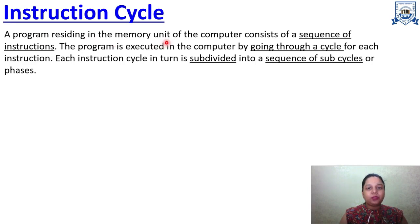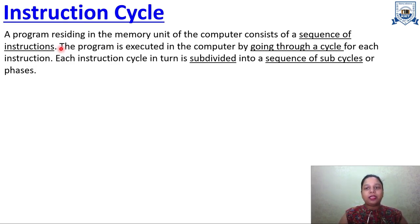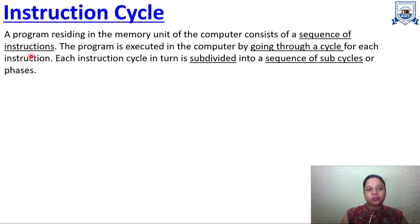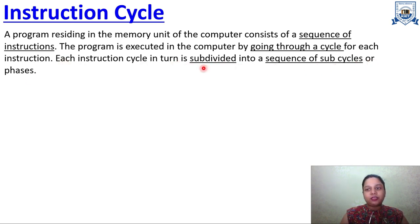Now let's define what is an instruction cycle. A program residing in the memory unit of the computer consists of a sequence of instructions. Any program in your memory unit has many sequences of instructions — you write sequences of instructions to achieve the goal of the program. The program is executed in the computer by going through a cycle for each instruction. That cycle is known as the instruction cycle. Each instruction cycle in turn is subdivided into a sequence of sub-cycles or phases.